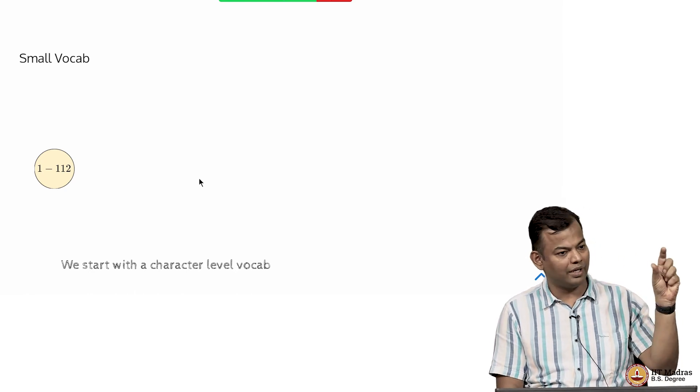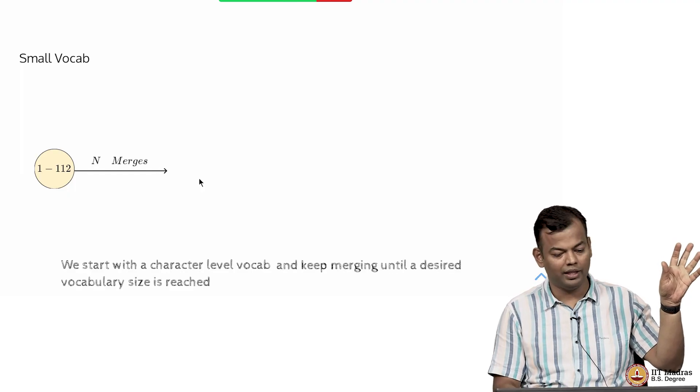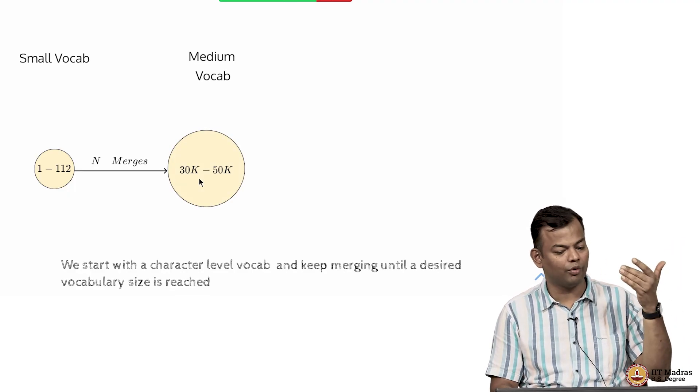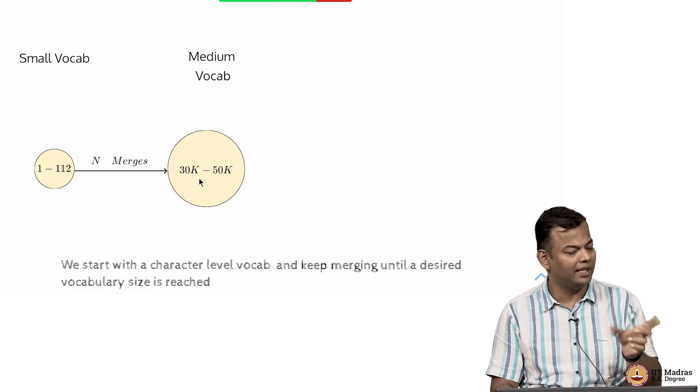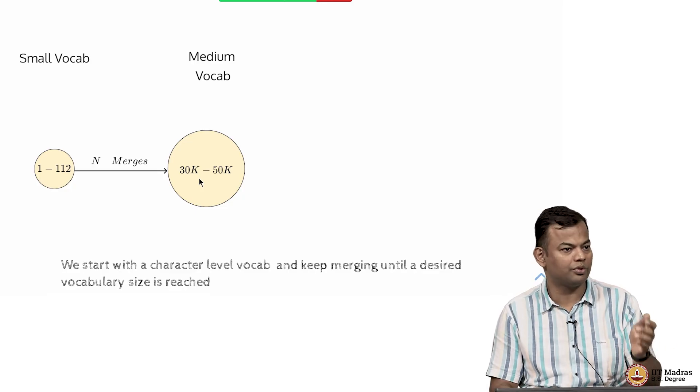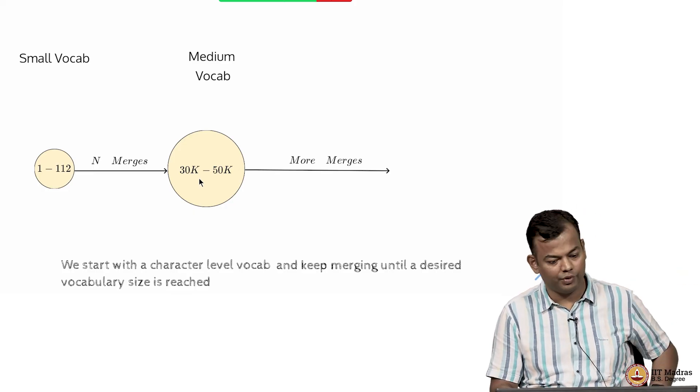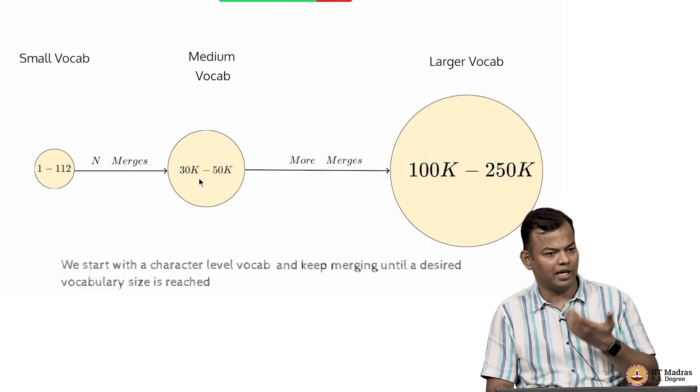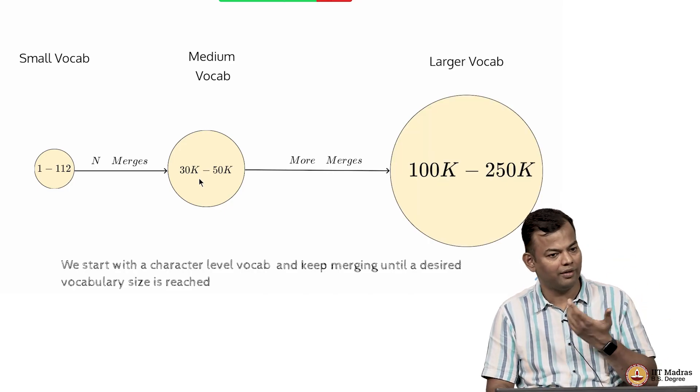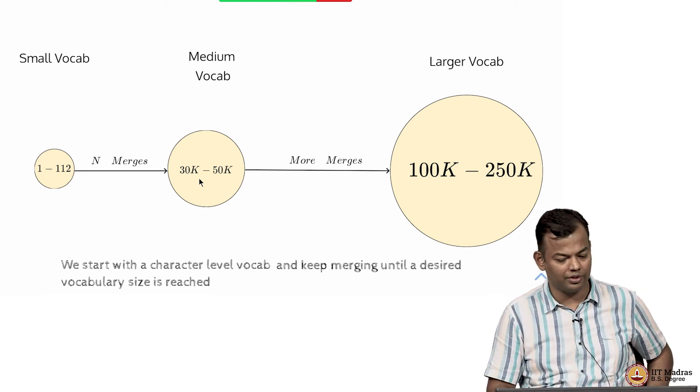You have this small vocabulary, character based vocabulary 1 to 112. You start with that, you do N merges, so then you get a vocabulary of size N roughly plus the initial vocabulary and that is in the range of 30K to 50K used in most single language large language models. In multilingual LLMs it would be different because you will have tokens for all the languages. If you keep doing more merges you will get larger and larger vocabulary. If you want 100K vocabulary size then you will do 100K merge operations.